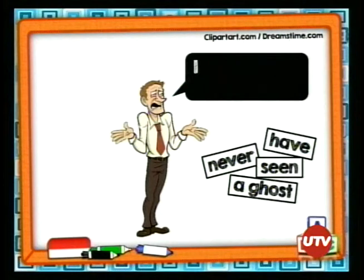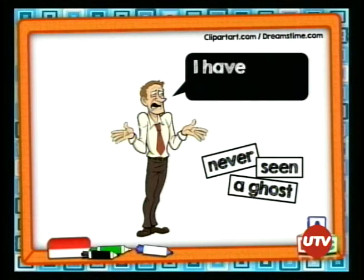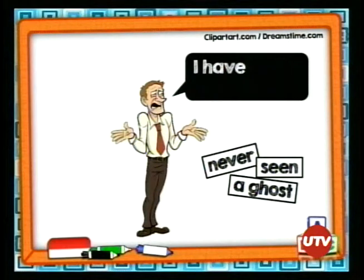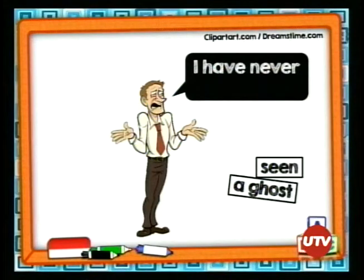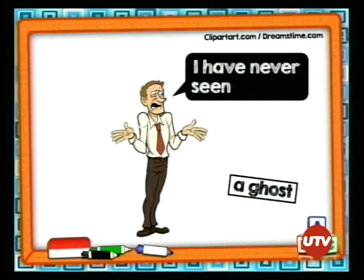Iniciamos con el pronombre I, que quiere decir yo. Luego, ¿se acuerdan que venía el auxiliar have? Que en este caso quiere decir «he» — yo he, I have. Luego colocamos el adverbio never, que significa nunca. I have never — hasta ahí tenemos yo he nunca, literalmente, pero lo entendemos como yo nunca he.